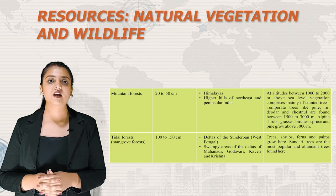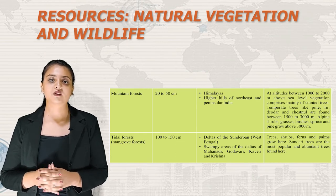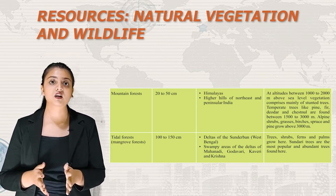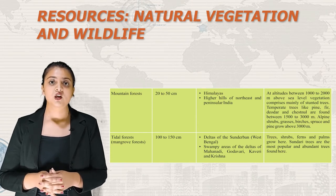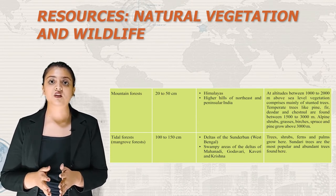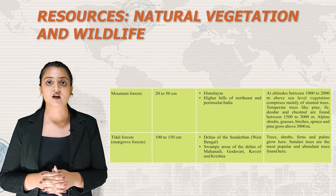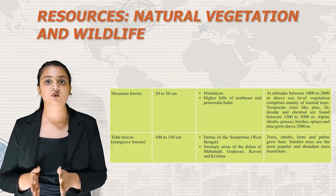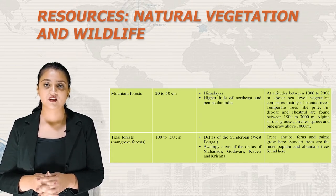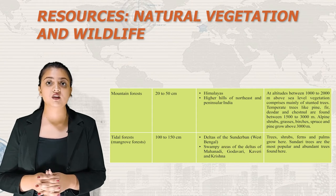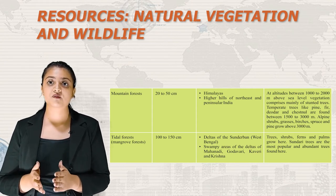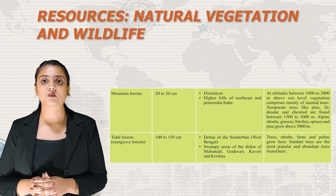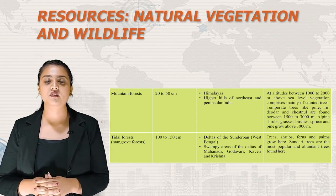Tidal Forest, also known as Mangrove Forest, receives rainfall between 100 to 150 cm. It is located in the delta of Sundarban in West Bengal and swampy areas of the deltas of Mahanadi, Godavari, Kaveri and Krishna. Vegetation includes trees, shrubs, ferns and palms. Sundari trees are the most popular and abundant trees found here.